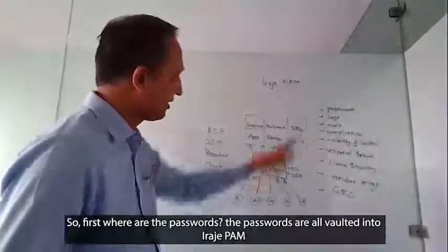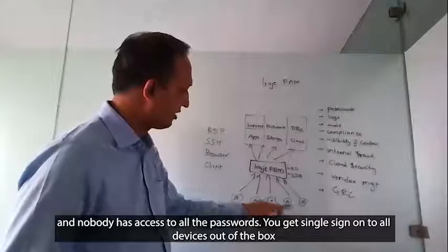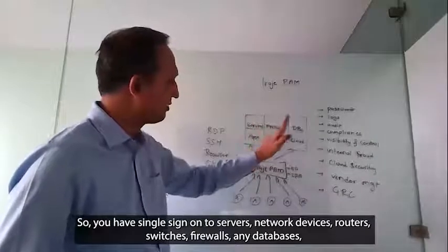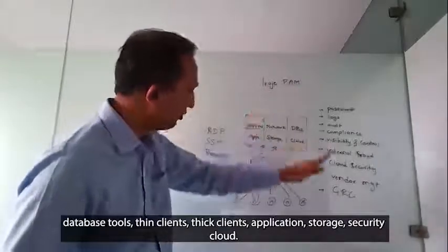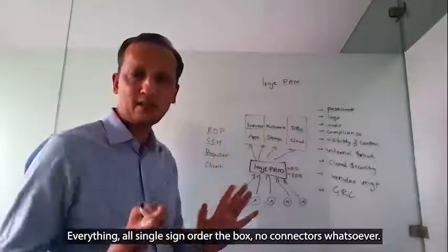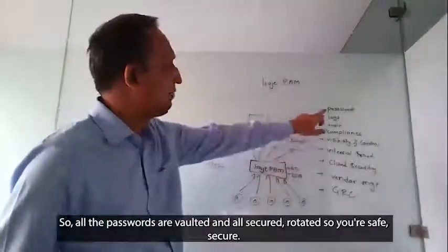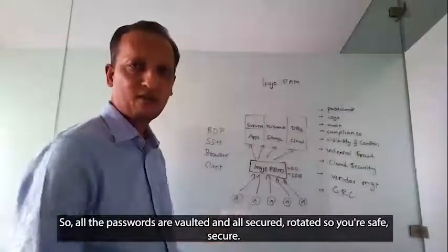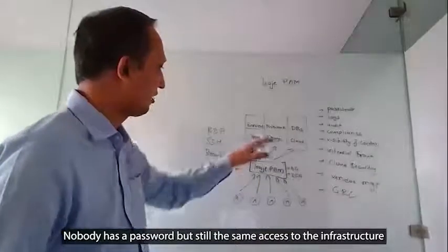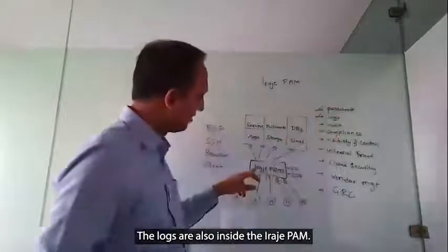First challenge addressed — where are the passwords? All passwords are vaulted in ERAJ PAM and nobody has direct access to them. You get single sign-on to all devices out of the box: any servers, network devices, routers, switches, firewalls, databases, database tools, thick clients, thin clients, applications, storage, security, cloud — everything. Single sign-on with no connectors whatsoever. All passwords are vaulted, secured, and rotated, so your infrastructure remains accessible but credentials remain safe.